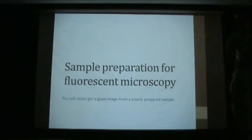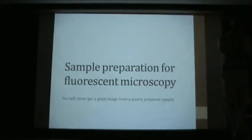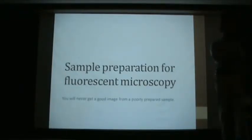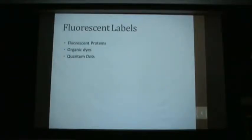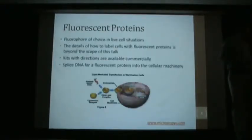We'll start on how to choose what sort of fluorophore to use for your sample. Sample prep is very important for fluorescence microscopy — you'll never get a good image if you have poor sample prep, and that topic is its own long lecture by itself. So this will just be a preview. There are three main types of fluorescent labels: fluorescent proteins, organic dyes, and quantum dots.